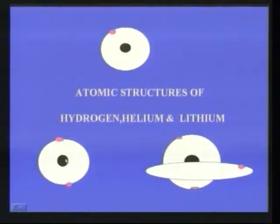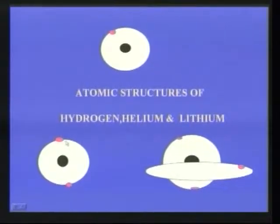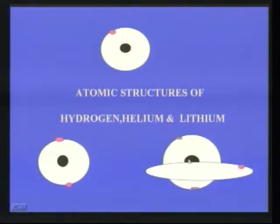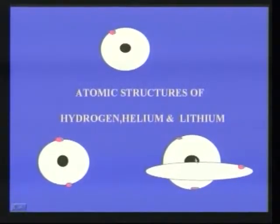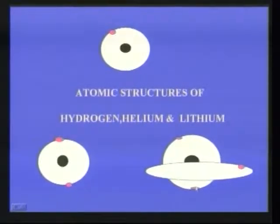This is the atomic structure of helium. In the nucleus we have two protons and in the orbit we have two electrons. Now let us see the atomic structure of lithium. Lithium's nucleus has three protons and three electrons arranged in two orbits. In the first orbit we have two electrons and the third electron is present in the next orbit, that is the P type orbit.